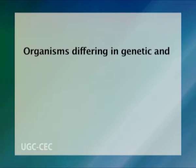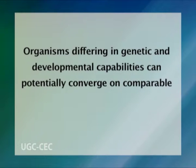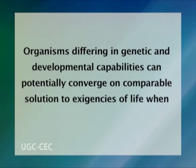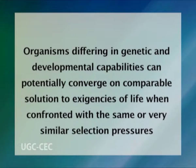Phenotypic correspondence among unrelated species provides useful clues and strong circumstantial evidence in favour of adaptive evolution, because it reflects that organisms differing in genetic and developmental capabilities can potentially converge on a comparable solution to the exigencies of life when confronted with the same or very similar selection pressures. Arborescence or tree growth form is the best example for this kind of understanding.